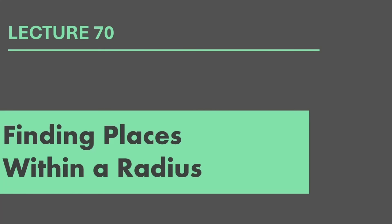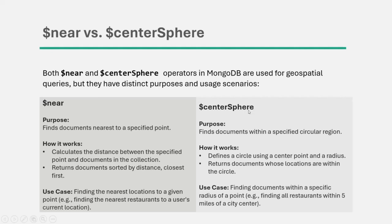We learned about the $near operator, and $near also does the same thing. In order to find all the places within a given radius, we are going to use the $centerSphere operator. The $near operator basically finds documents nearest to a specific point. On the other hand, $centerSphere finds the documents within a specified circular region. The $near operator calculates the distance between the specified point and documents in the collection and returns documents sorted by distance, closest first.